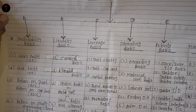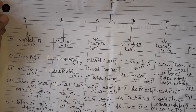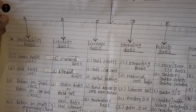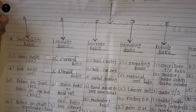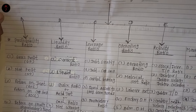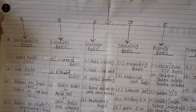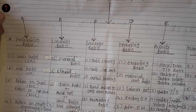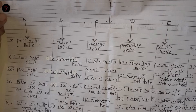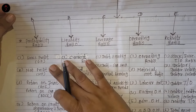In fact, जितने भी research होते हैं, whether it is for M.Phil — Master of Philosophy — or PhD, generally students or researchers ratio use करते हैं for comparison and evaluation purpose. So, सबसे पहला जो हमारा line of ratio है classification में, that is Profitability Ratio.